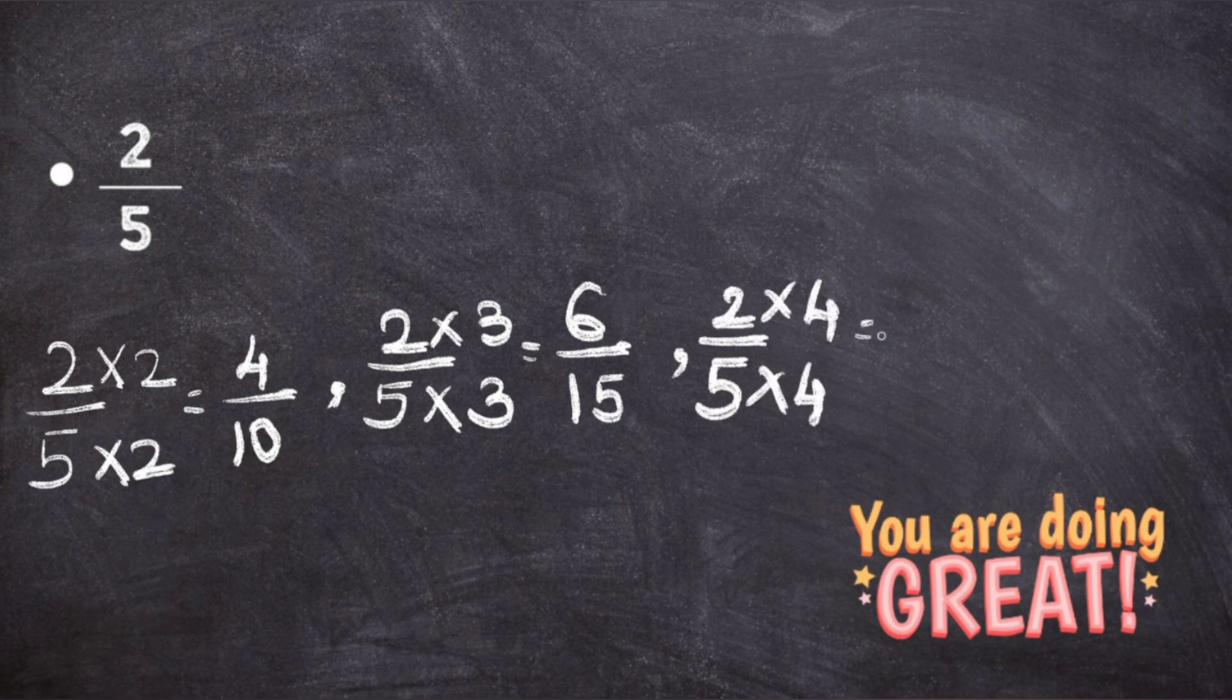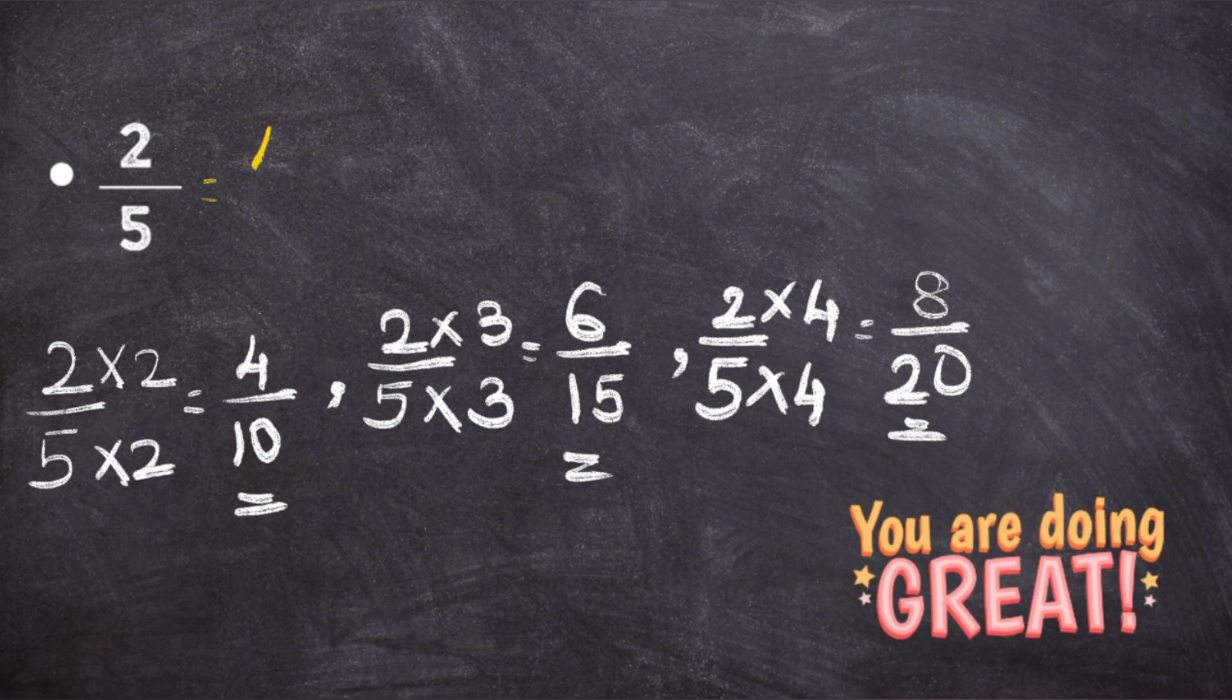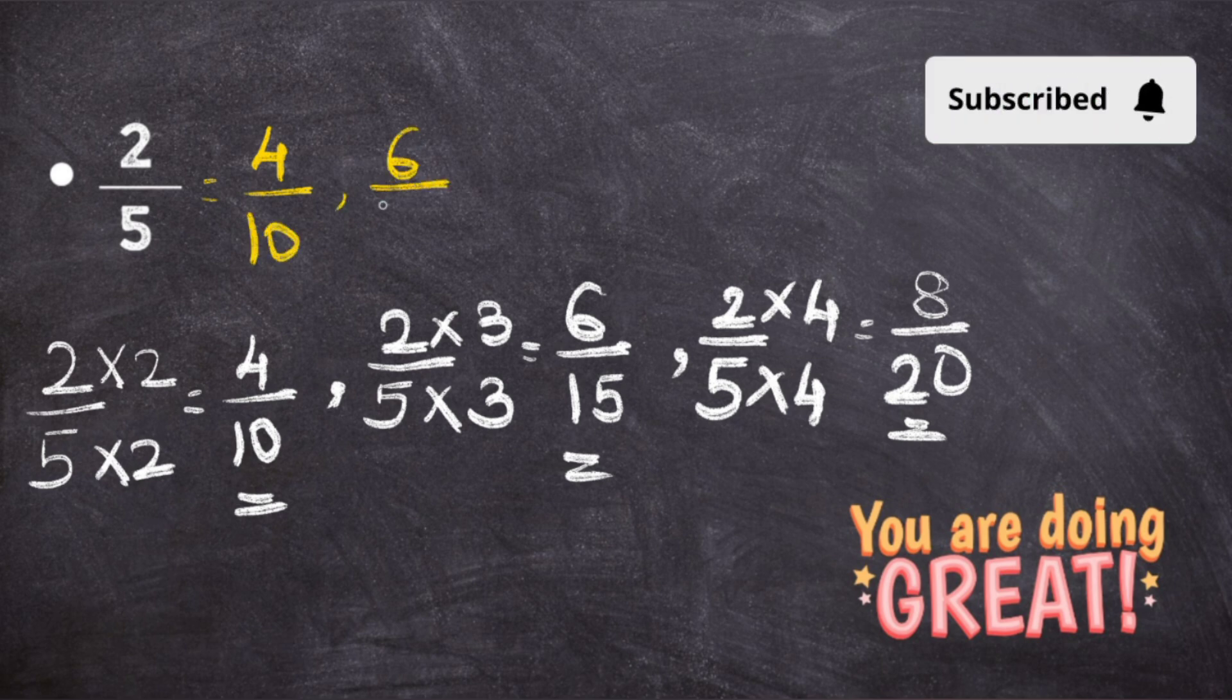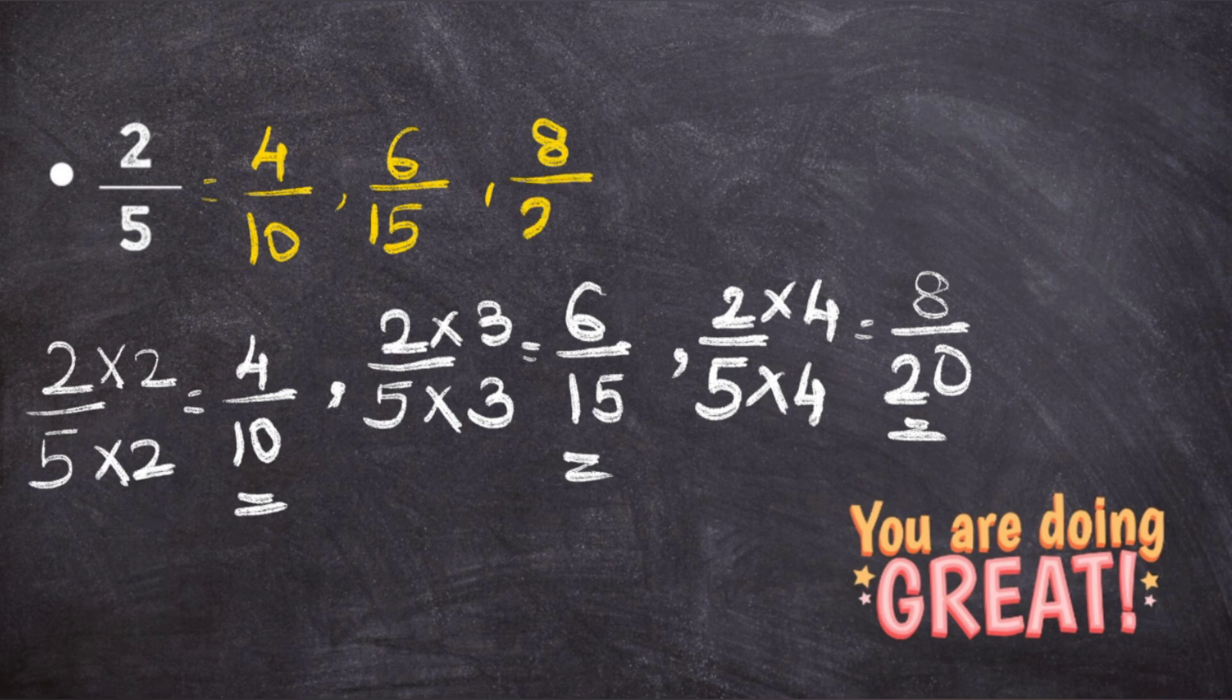Now 2 upon 5 into 4 into 4. So 2 times 4 is 8 and 5 times 4 is 20. You got the three equivalent fractions to the given question. So the answer will be 4 upon 10, 6 upon 15, and 8 upon 20.